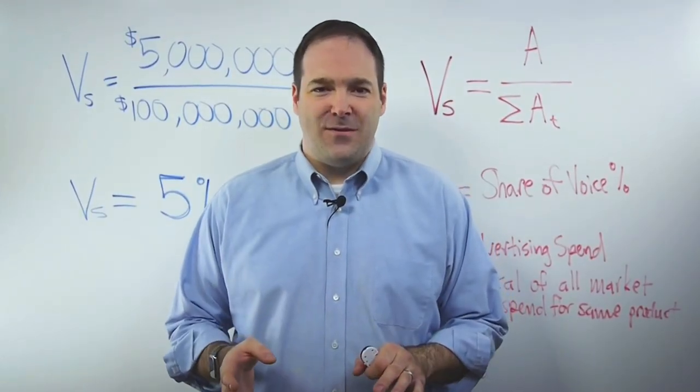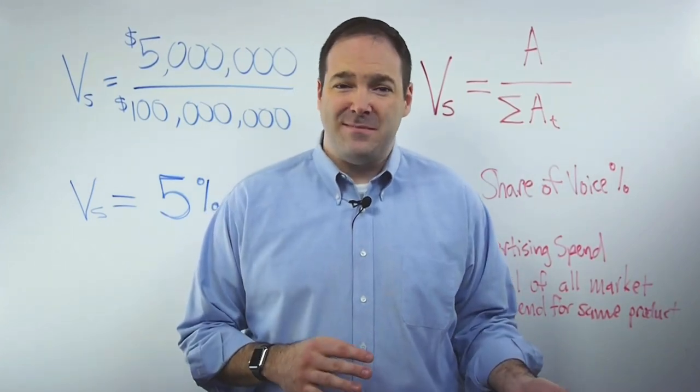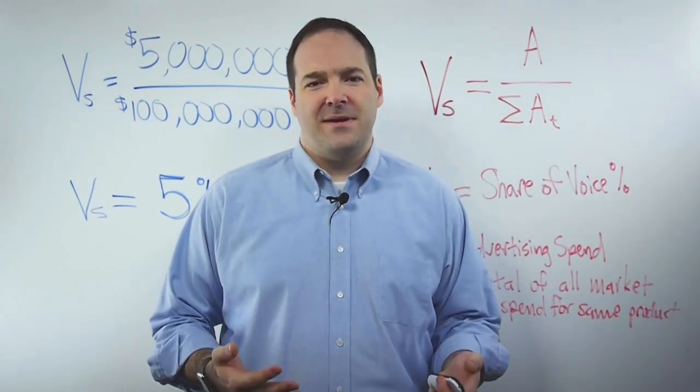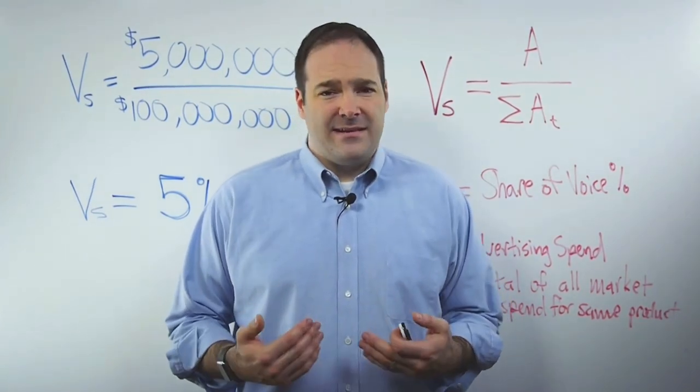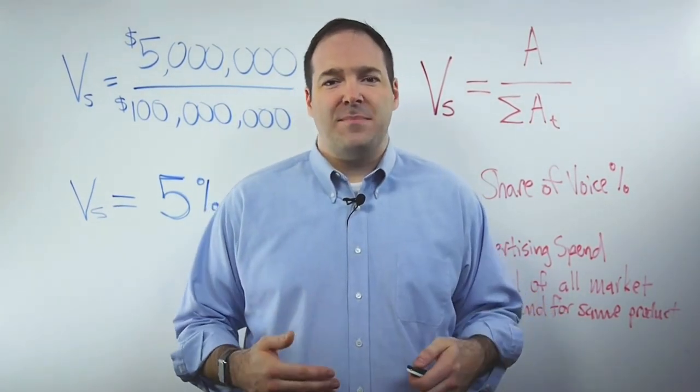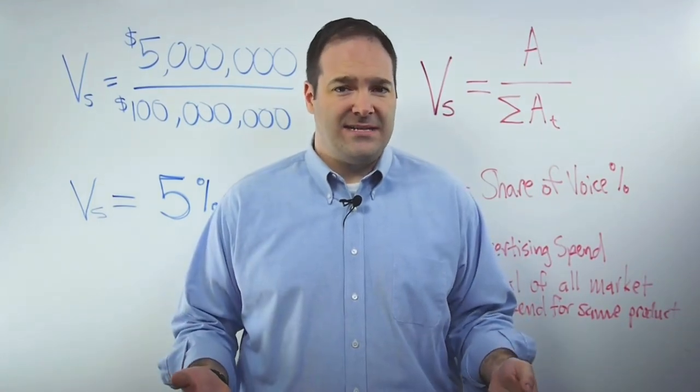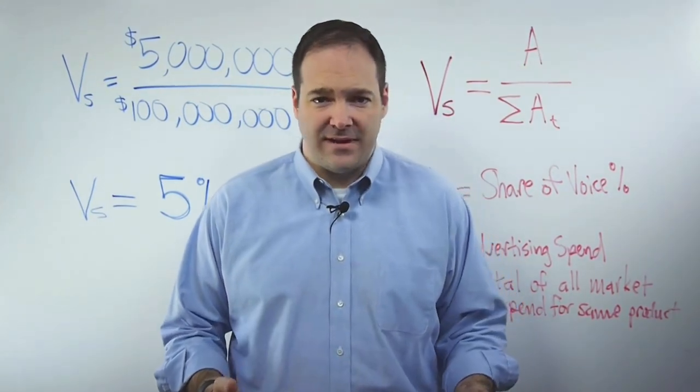The traditional calculation for share of voice measures the percentage of media spending by a company compared to the total media spend for the product, service, or category in the market. We calculate share of voice by taking your advertising spend and dividing it by the total of all market advertising spending for the same type of product or category.